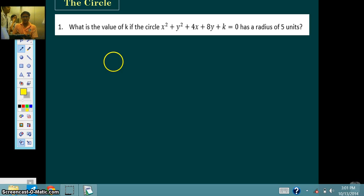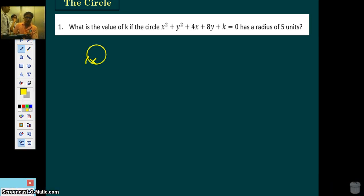What is the value of k if the circle x squared plus y squared plus 4x plus 8y plus k equals zero has a radius of 5 units? It's very easy. All you need to do is convert this into standard form.